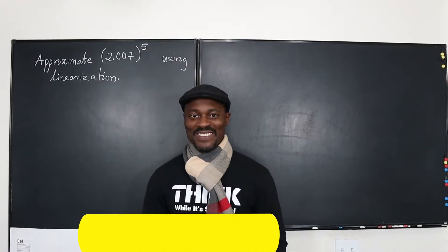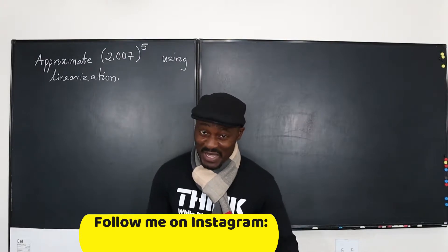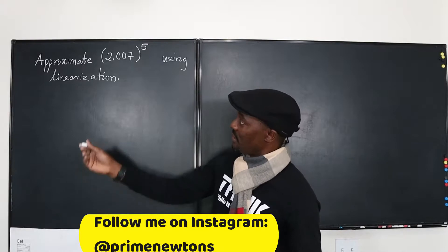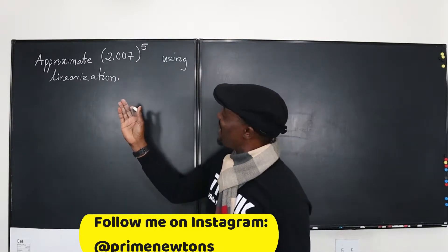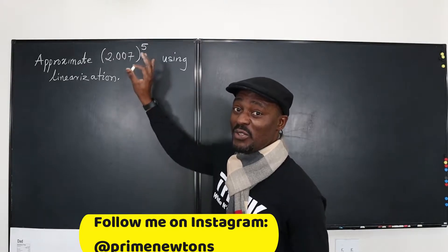Hello, welcome to another video. So, this is a linearization problem, which simply means you're approximating because what you're doing is not a linear function. This is a quintic kind of function, you're raising something to the power of five.